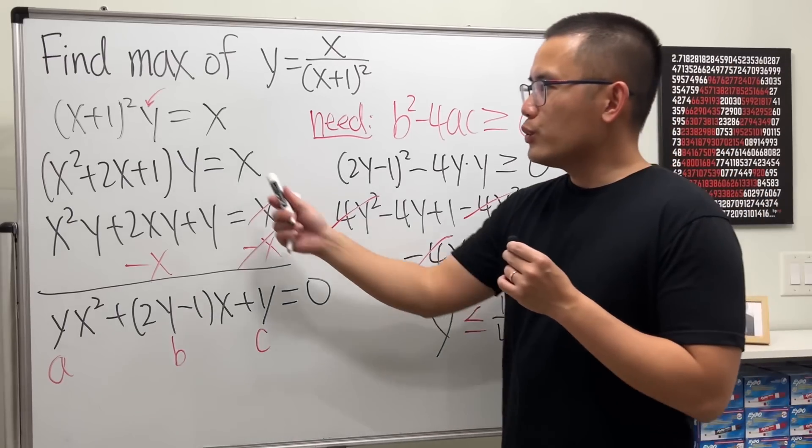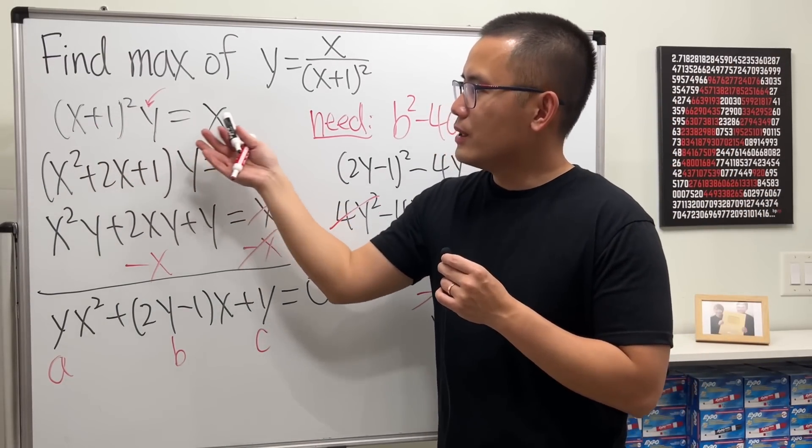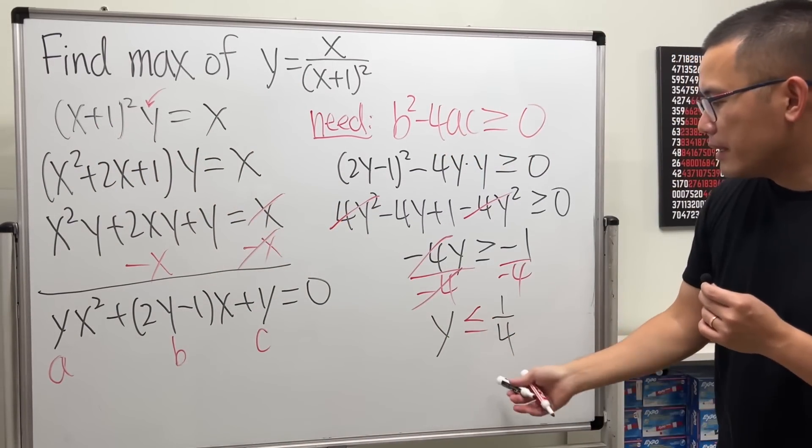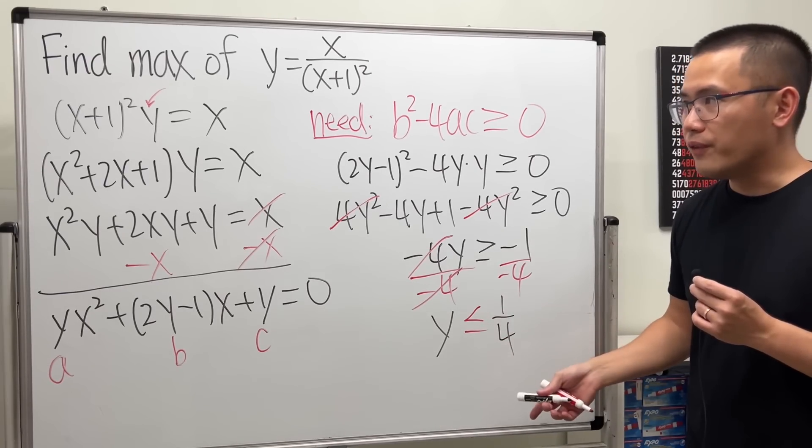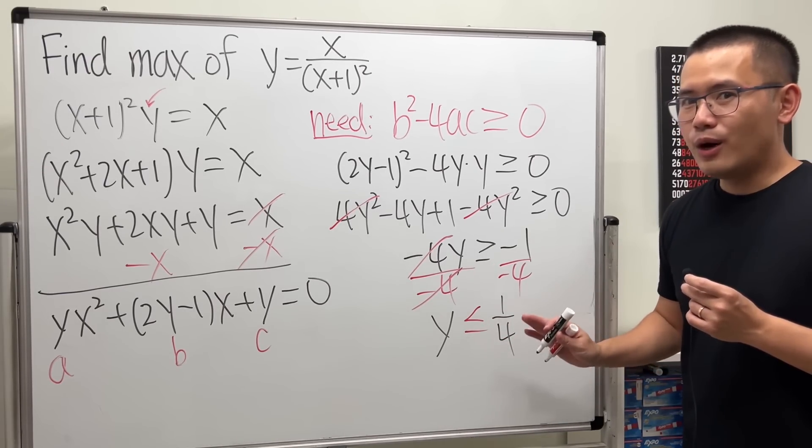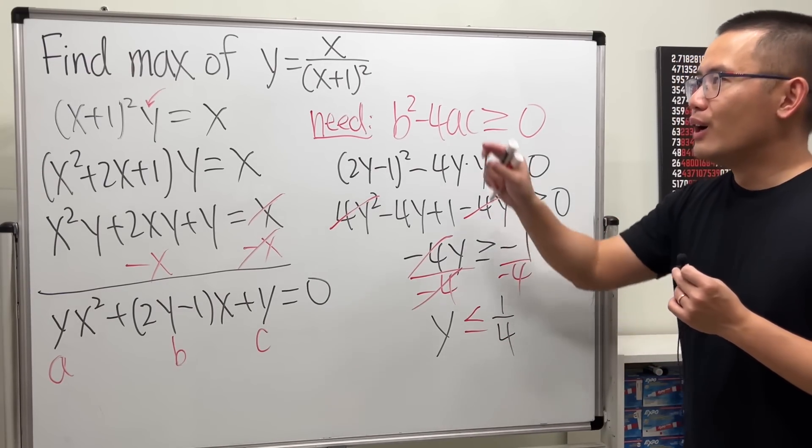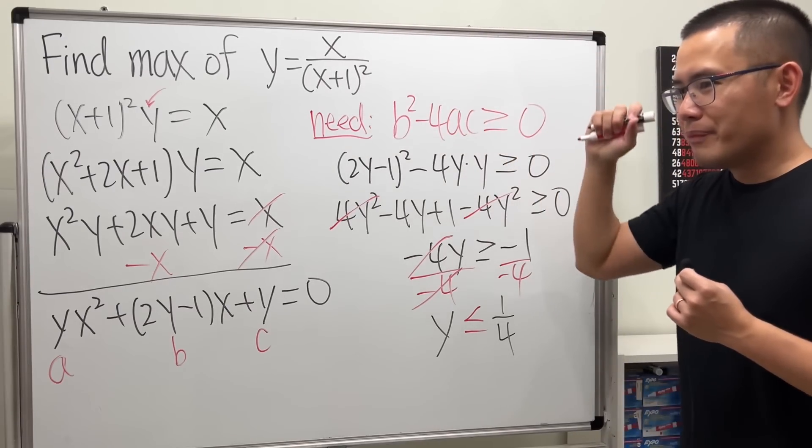Therefore, in order to have a solution to this equation, y better be less than or equal to 1 over 4. In fact, this also tells you the range of the original function.